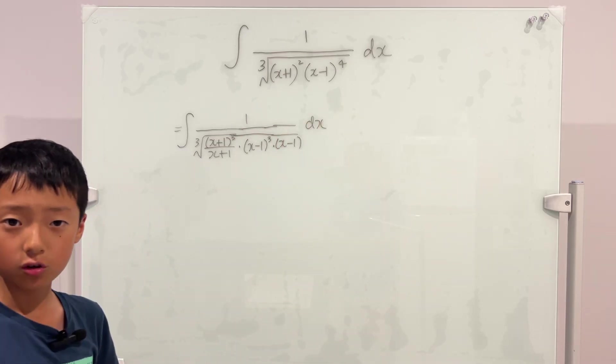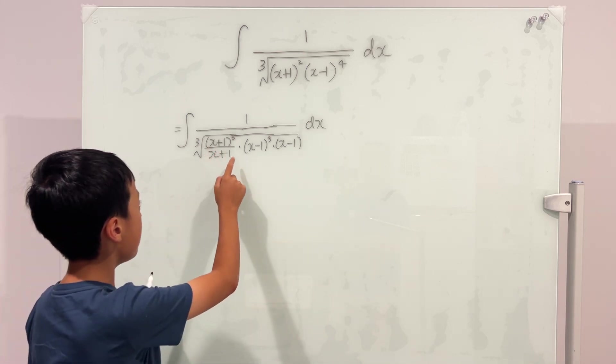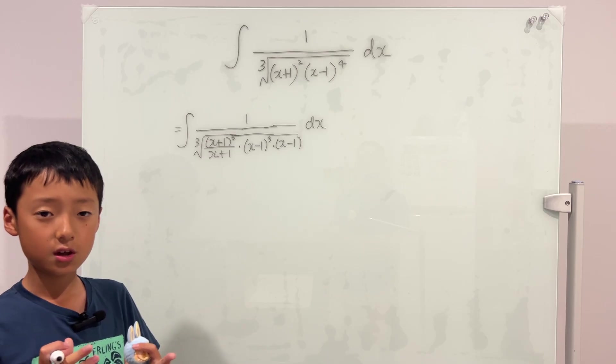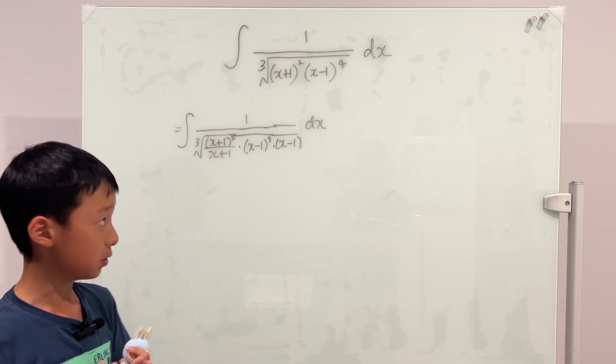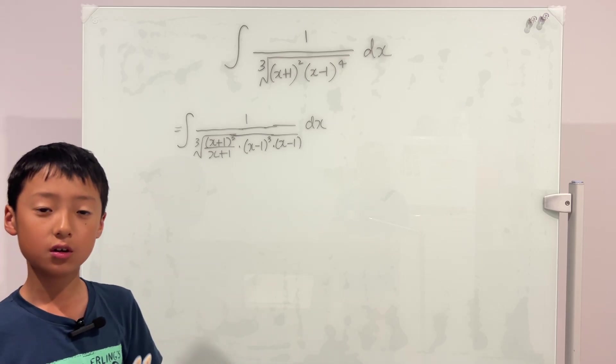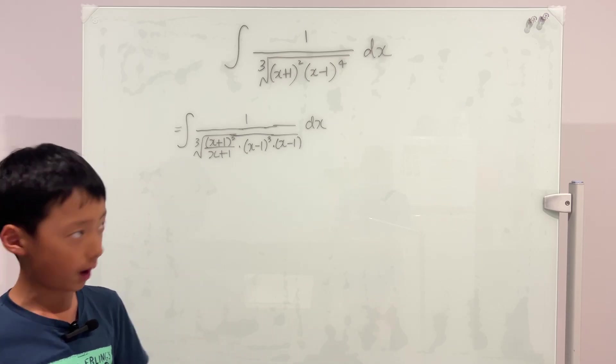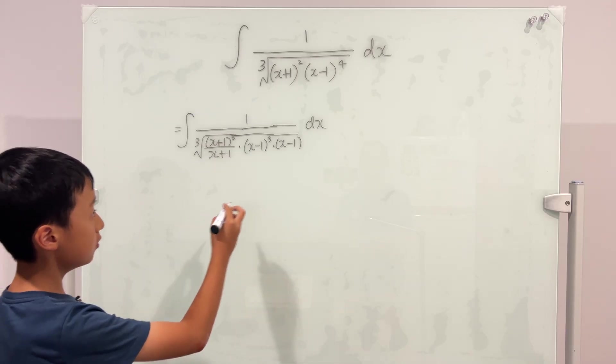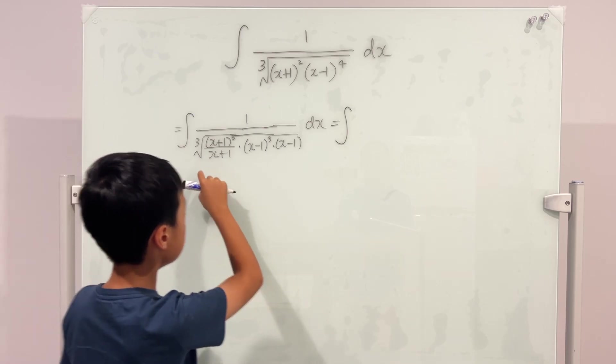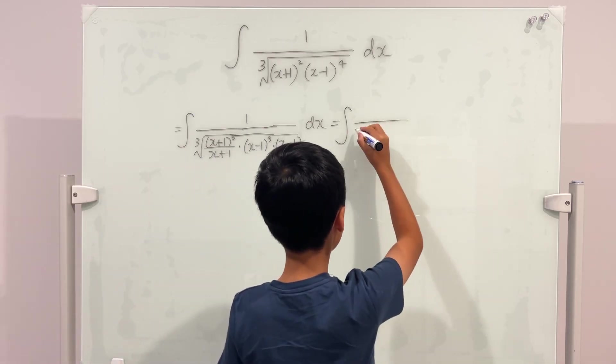Now look, we have x plus 1 cubed and x minus 1 cubed inside of a cube root, so we can take the terms outside of the cube root and then it will become x plus 1 times x minus 1, which is x squared minus 1. This is equal to integral of, outside would be x squared minus 1.